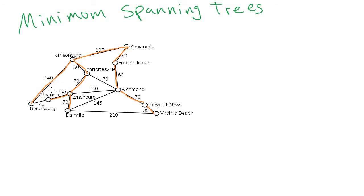It's a tree in the sense that there are no cycles. There's no concept of a root — we could pull up Richmond or Harrisonburg as the root, it doesn't really matter. We're just concerned about picking some subset of edges that connect everything together. This spanning tree has a cost — the sum of all edges in it, like the 140, 135, 50, 50, 60, 70, and so on. The question is: what is the minimum spanning tree we could create?